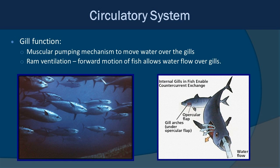Gills can function in two different ways. You can have the muscular pumping mechanism that occurs with the gill covers — the opercula — or you can have what we call ram ventilation, where the fish swims forward with its mouth open, allowing water to come in the mouth and out the gills, flushing them with water. Generally, open-water pelagic fish tend to use ram ventilation, whereas benthic or coastal fish that aren't swimming constantly use the pumping mechanism to create water flow.